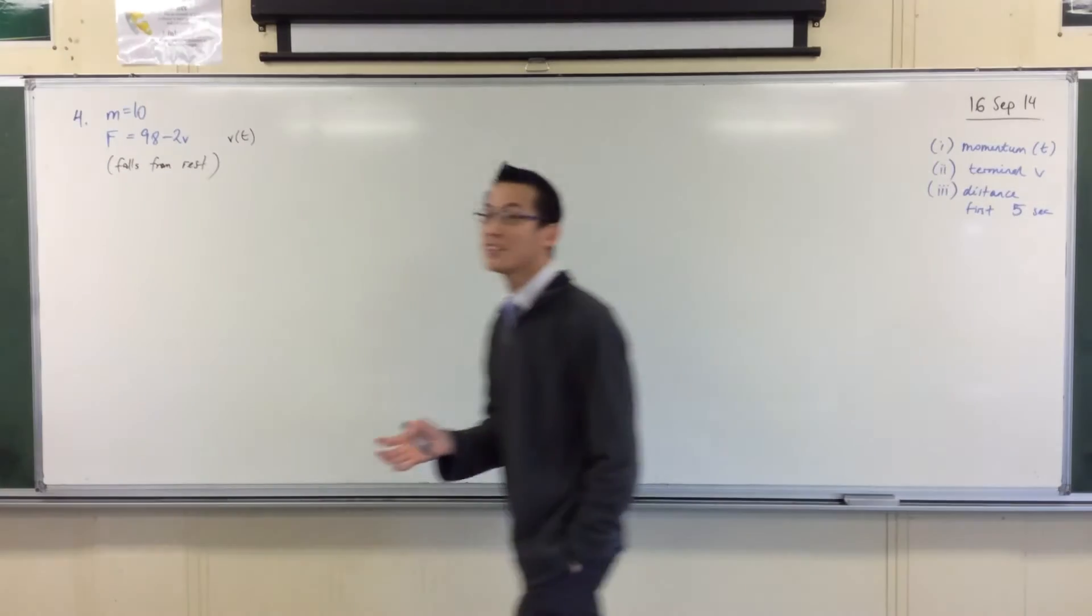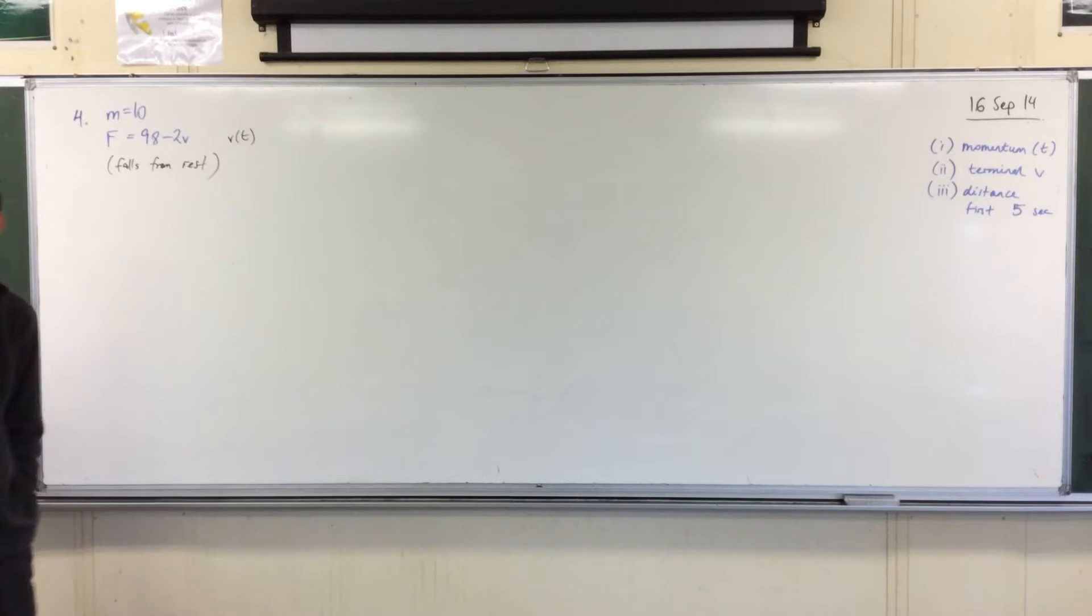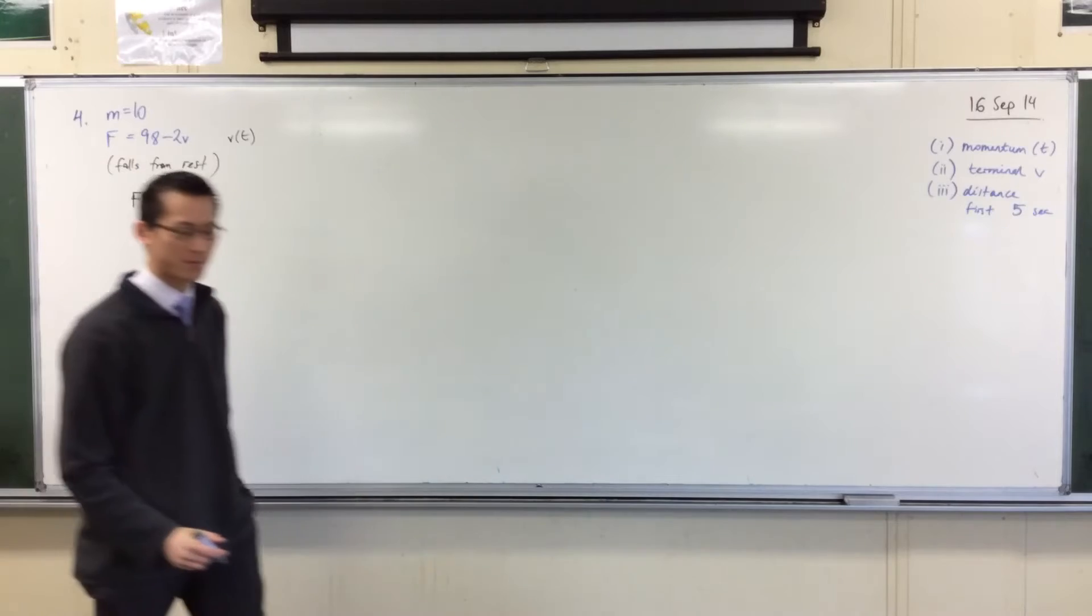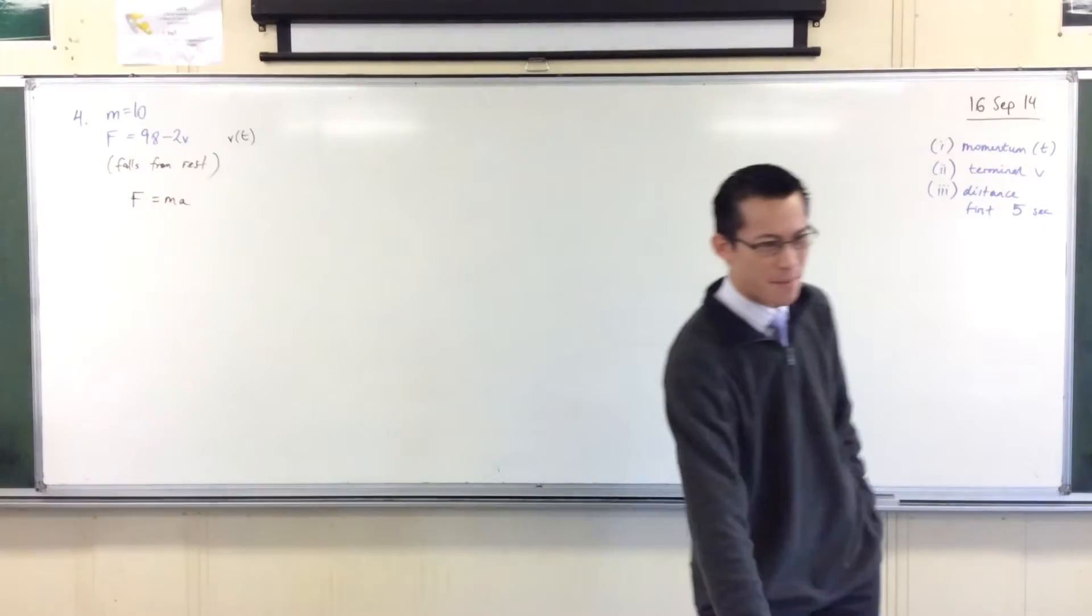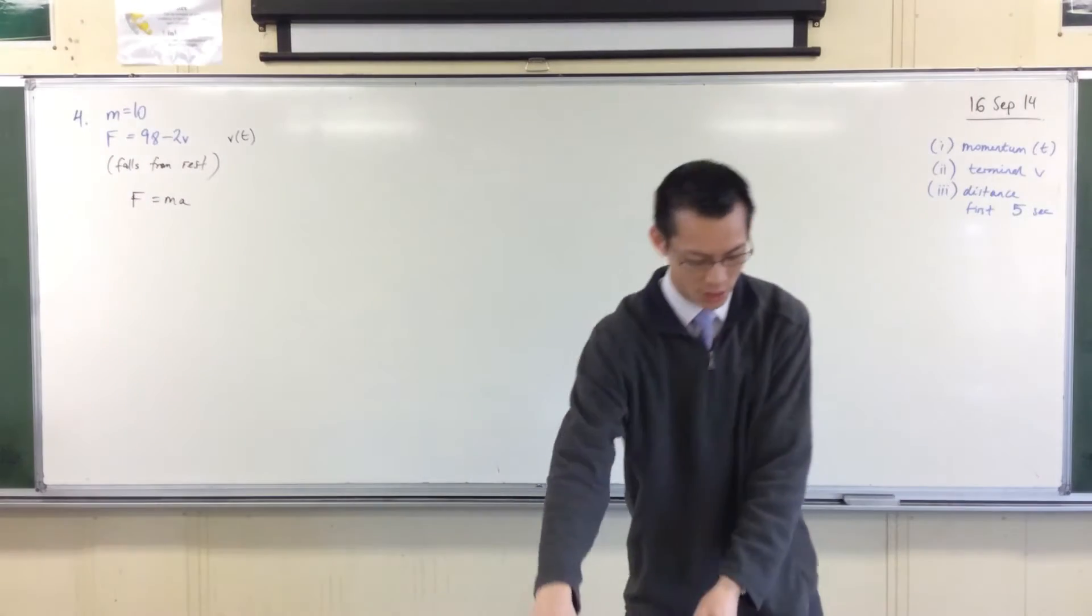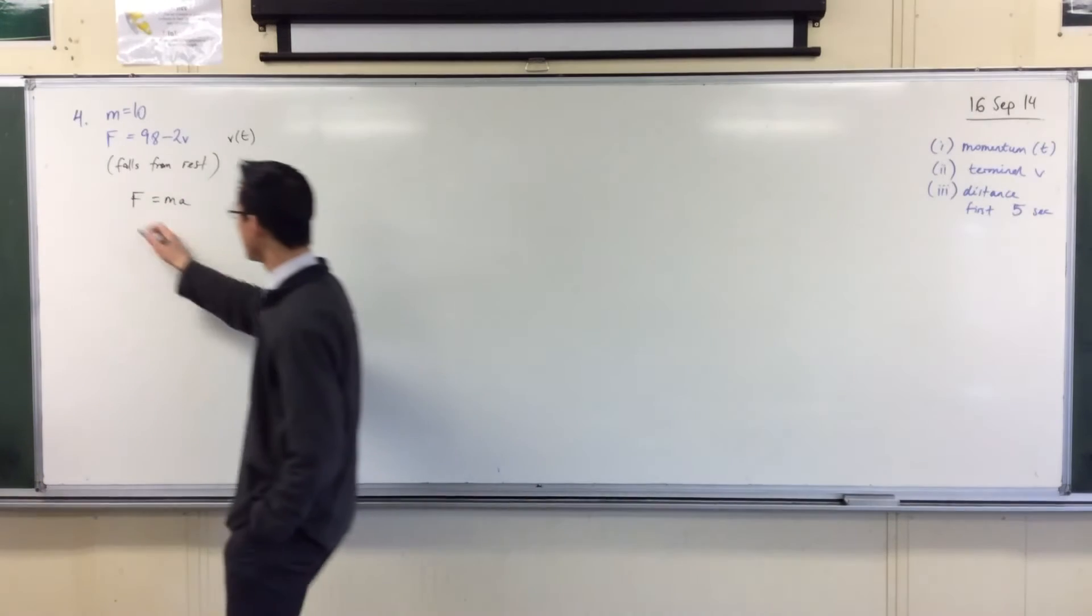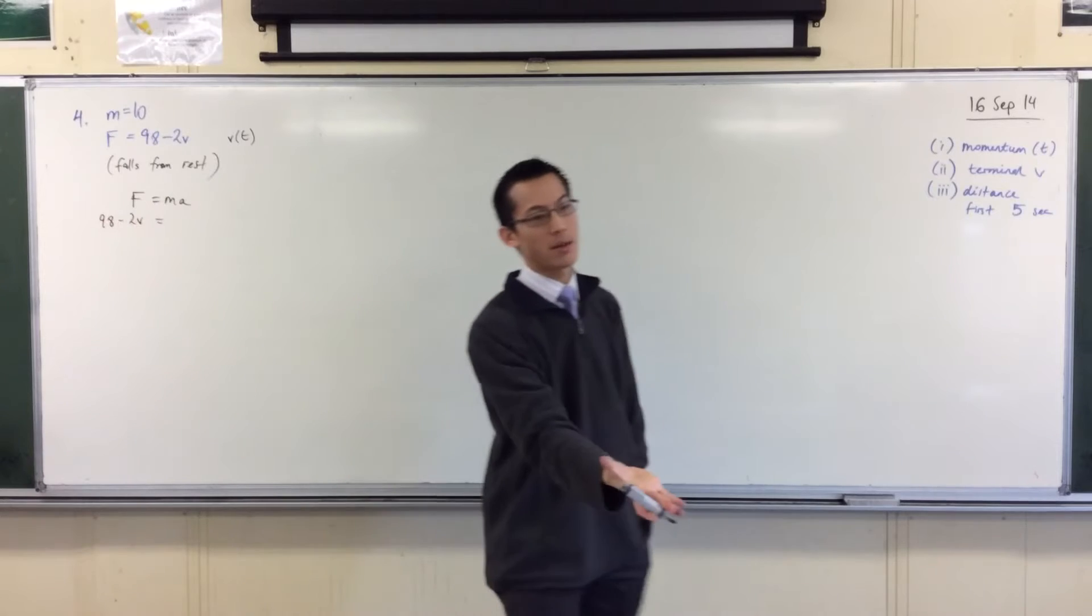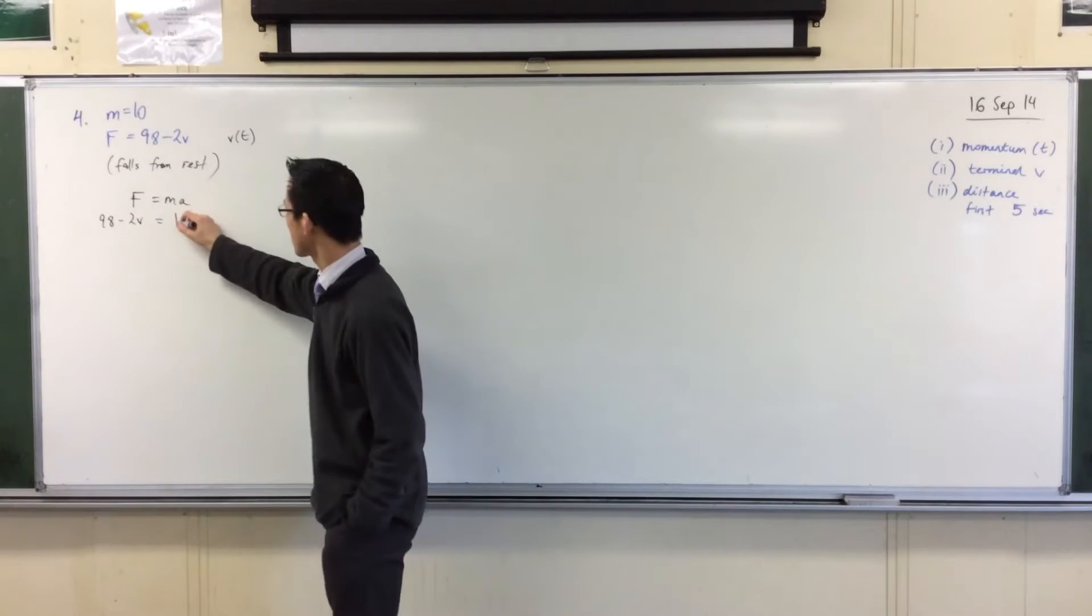How do we begin? How do most of these kinds of resistive motion questions begin? You start with a force, right? So here's where you start. F equals ma, so you know what the left-hand side is going to be. That's 98 minus 2v. And you also know what the mass is. So that's 10.